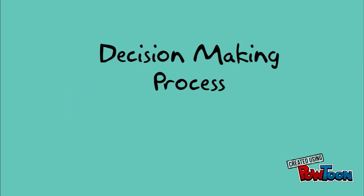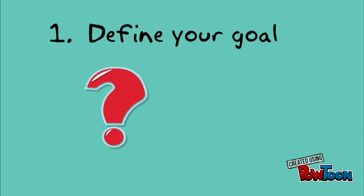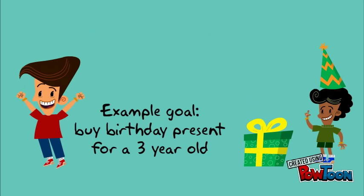The first step of the decision-making process is to define your goal. You need to determine what you want to achieve. In this example, Joey wants to buy a gift for a three-year-old he babysits.